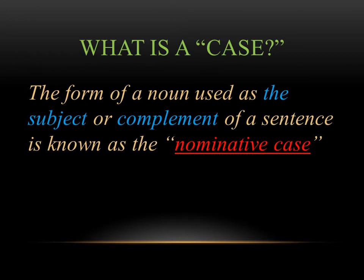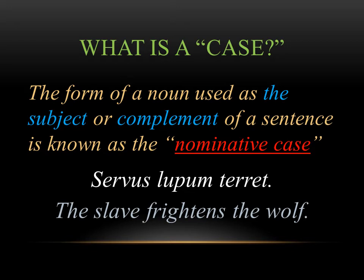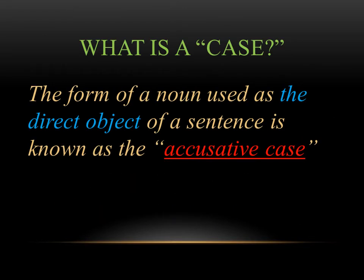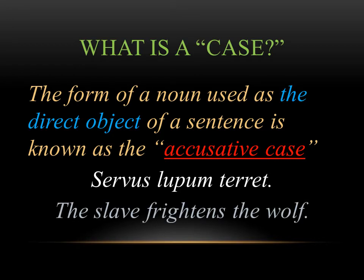The form of a noun used as the subject or complement of a sentence is what we call the nominative case in Latin. For example, in servus lupem terret, the subject is servus, the slave — this is the nominative case. The form of a noun used as the direct object is what we call the accusative case. The direct object here is lupem, the wolf, and you can see it has a different ending of -em. This is the accusative case.